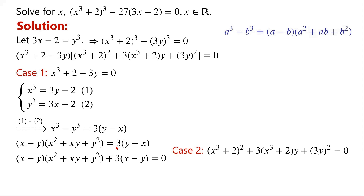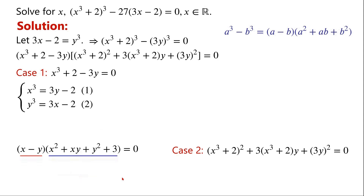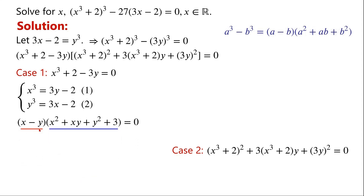By moving 3 times (y minus x) to the left-hand side, it becomes plus 3 times (x minus y). We can see that the two terms have a common factor (x minus y), so we can write (x minus y) times (x squared plus xy plus y squared plus 3) equals 0. So either x minus y equals 0, or x squared plus xy plus y squared plus 3 equals 0.